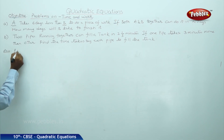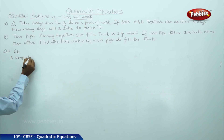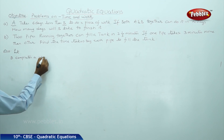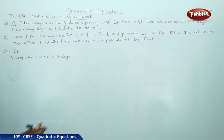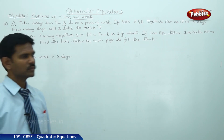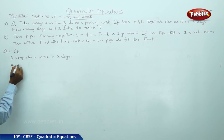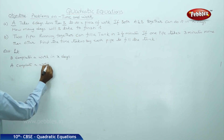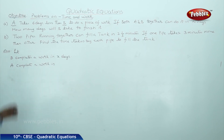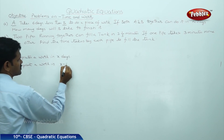Let B complete a work in X days. Then A completes the work in X minus 6 days, because according to the question, A takes 6 days less.